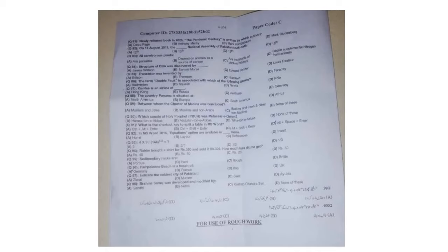Question 81: The newly released book in 2020, 'The Pandemic Century,' is written by Mark Honigsbaum — C is the right answer. Question 82: On 30 August 2018, the 15th National Assembly took oath. Question 83: All carnivorous plants are parasites. Question 84: The structure of DNA was discovered by James Watson.